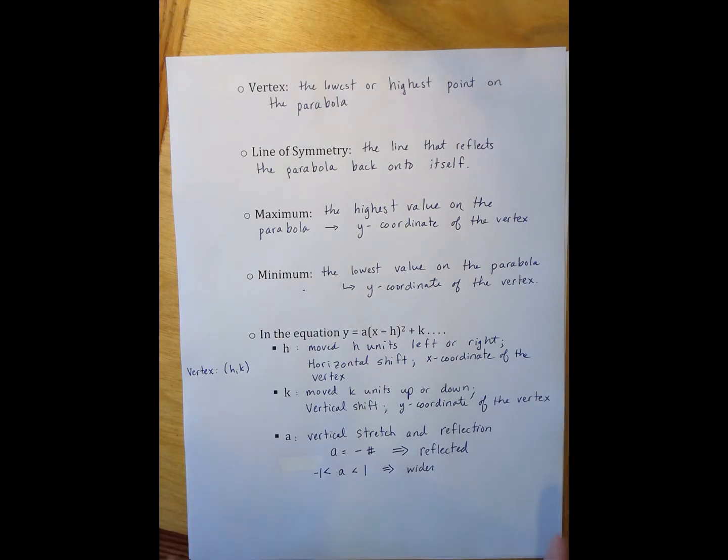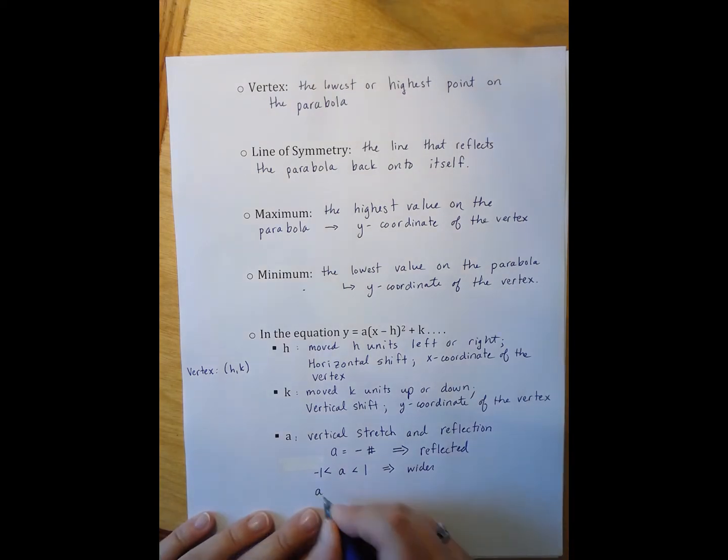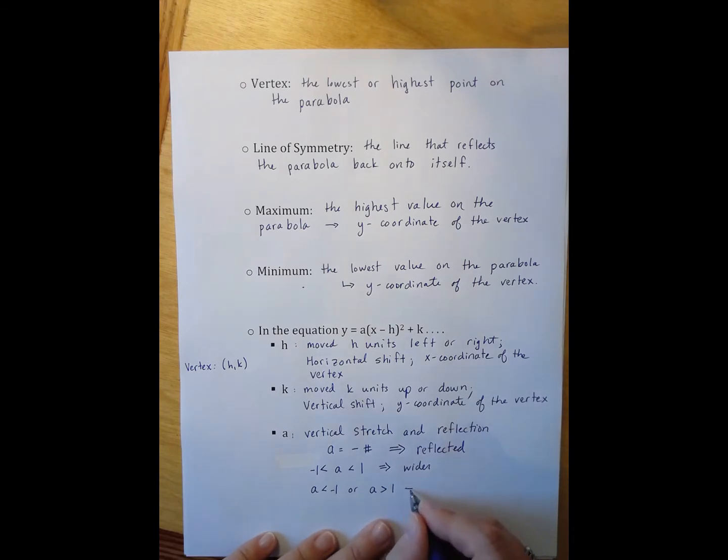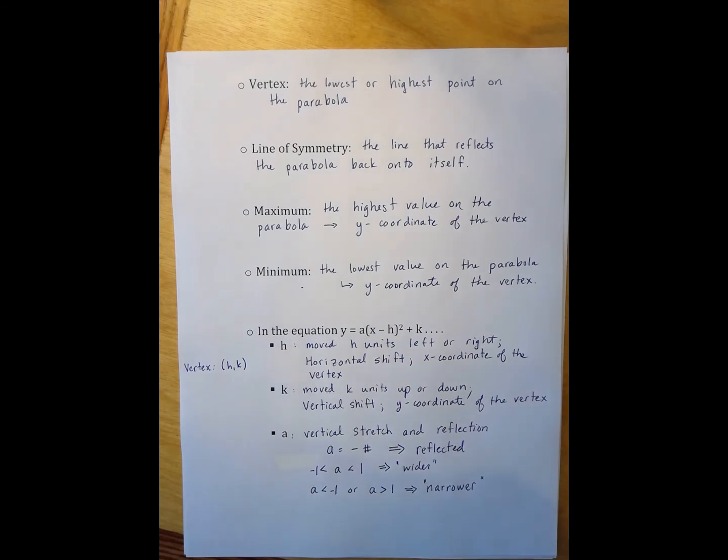So then the other option is when a is less than negative one or a is greater than one. And when a is less than negative one or greater than one, it actually causes our parabola to look narrower, get skinnier. And those are sort of the general things that the a does for us.